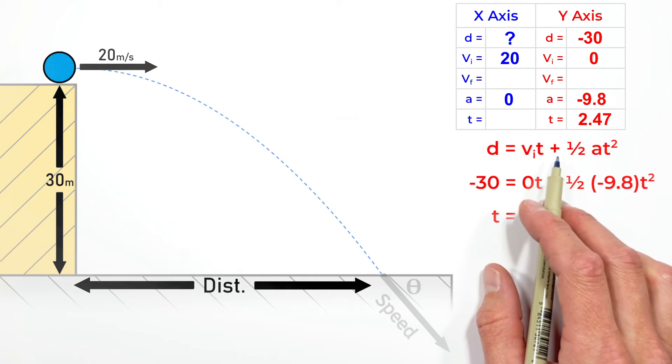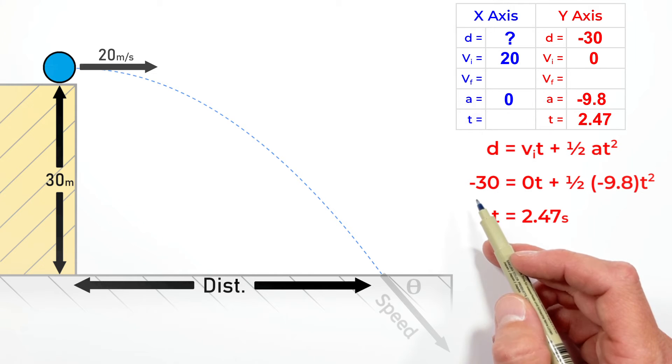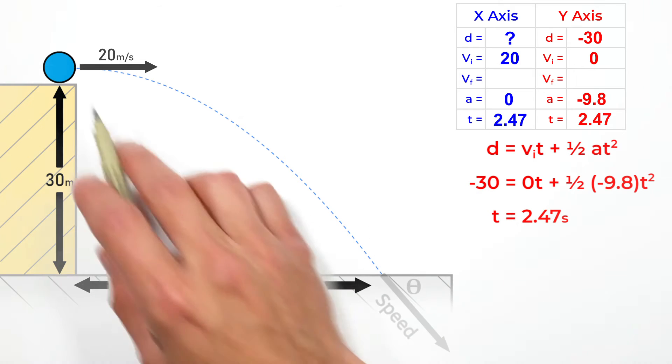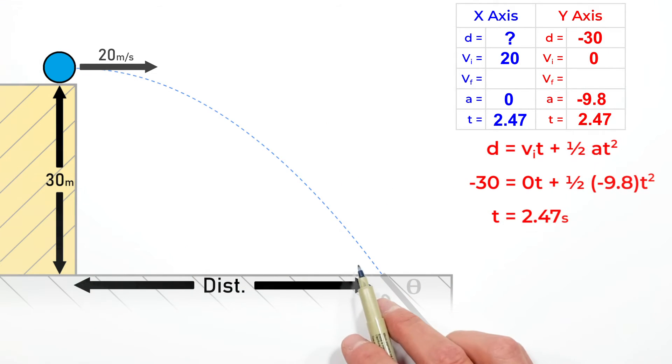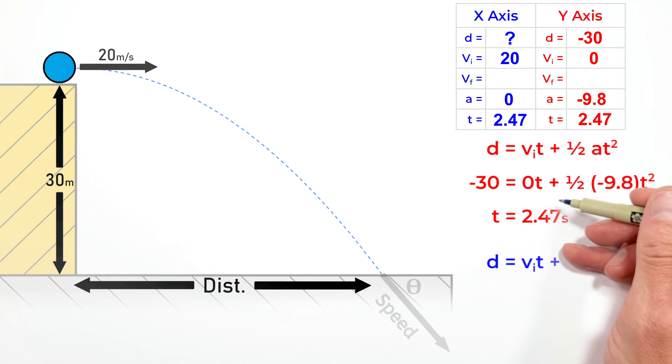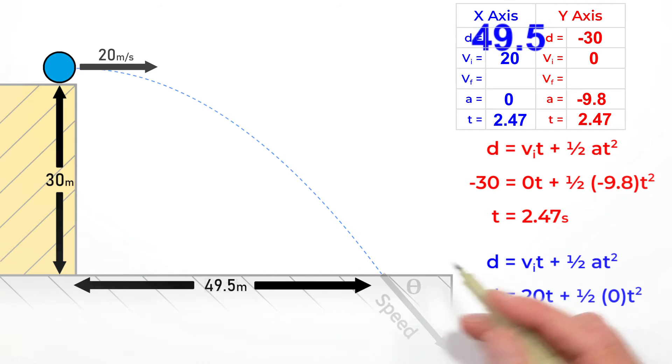That 2.47 seconds is the same time the ball is moving horizontally. If we know the ball is moving at 20 meters per second for the whole 2.47 seconds, using the displacement equation we can plug in our values and find the ball travels 49.5 meters horizontally.